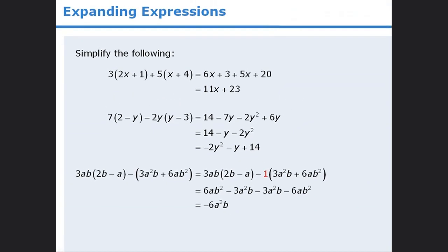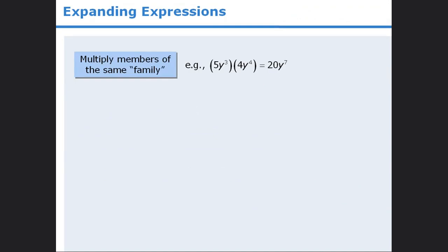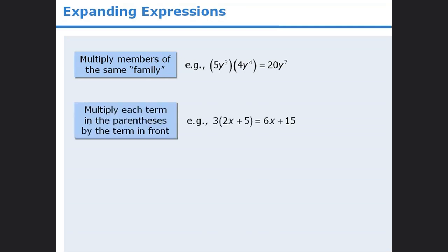To summarize: in this lesson, we learned that we can find the product of monomials by multiplying members of the same family. And we learned that we can find the product of a monomial and a polynomial by multiplying each term inside the parentheses by the term in front of the parentheses.